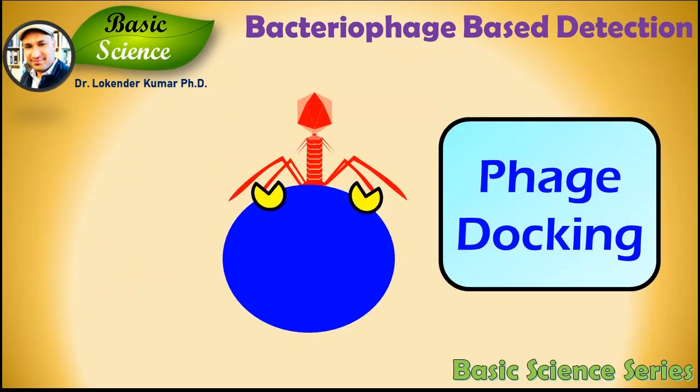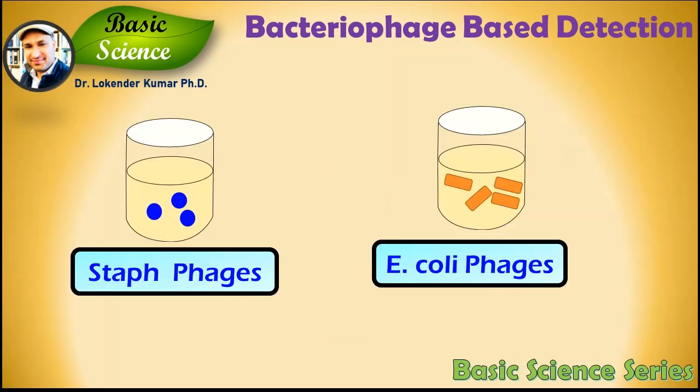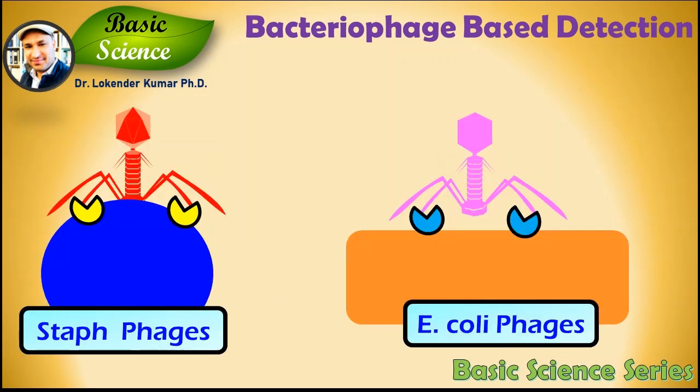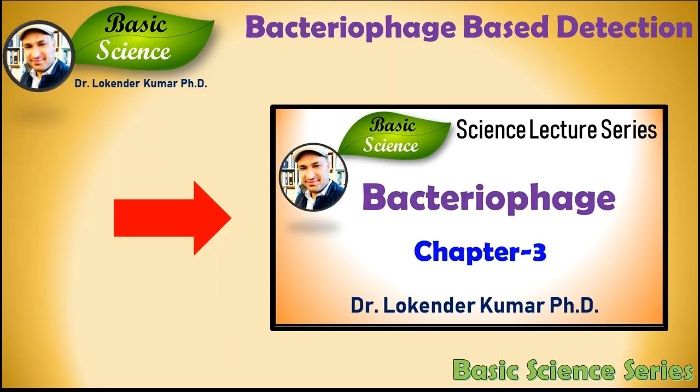Attachment of a phage with a bacterial surface protein is called phage docking. Host growth conditions also influence the ability of a phage to attach and invade. Staphylococcus phage will attack only Staphylococcus; E. coli phages will attack only E. coli strains. Therefore they are a very useful tool to use as diagnostic markers.